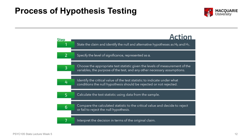The first step is to state the claim — our research hypothesis — what particular prediction we're making — and also to write out the null hypothesis and the alternate hypothesis. We also need to decide what the level of significance is, represented by the Greek symbol alpha. I'll explain more about that towards the end of the lecture.